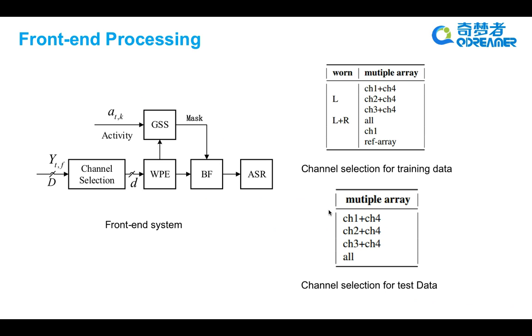For training data, we have eight types of channel selections, two for the in-ear microphone data and six for the multiple array data. While for the test data, we have four types of channel selections for the multiple array data.